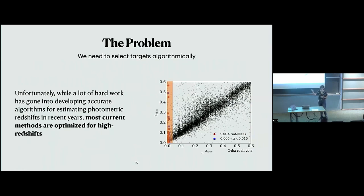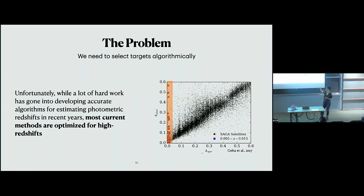There's been a lot of work on algorithmic target selection using photometry. Unfortunately, most photometric redshift algorithms have been optimized for higher redshifts and thought about in the cosmological context. These algorithms are really, really good at what they do, but they just have not been optimized for selecting these lowest redshift objects. As an example from the first SAGA paper, using a photometric redshift algorithm you get a lot of scatter — it's not able to accurately give you redshifts for very low redshift objects.